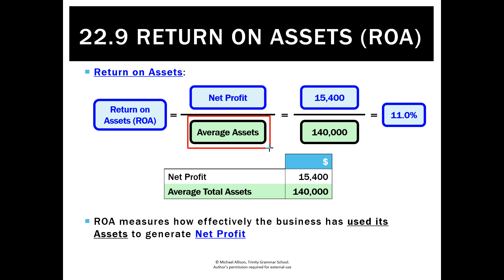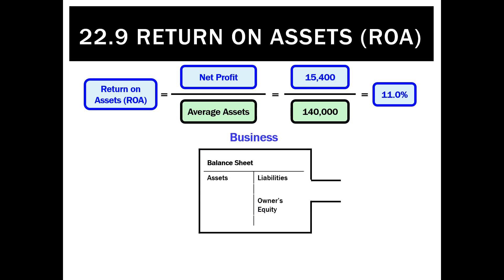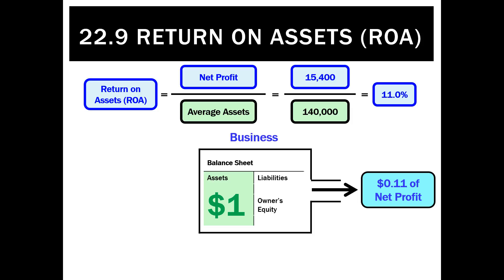That equals a percentage of 11%. So what does that mean? It means that if you gave this business a dollar of assets in its balance sheet, it is going to produce a net profit of 11 cents. That's how efficiently it's using its assets to generate net profit.